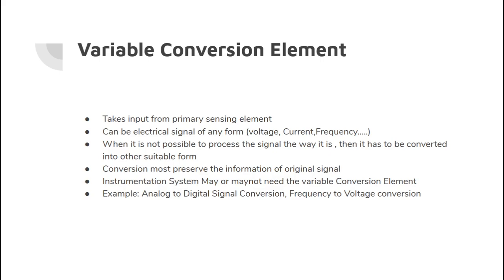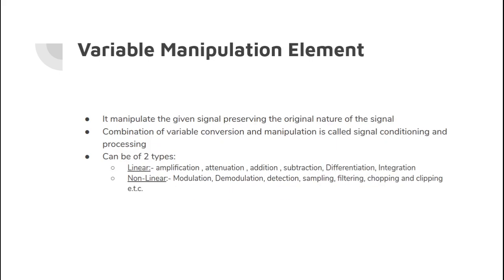Next is the variable conversion element. It takes the input from the primary sensing element; it can be any electrical signal such as voltage, current, or frequency. When it is not possible to directly process the incoming signal as it is, it has to be converted into a more suitable form, and for that the variable conversion element is used. The main example is the conversion of analog to digital signal or frequency to voltage conversion.